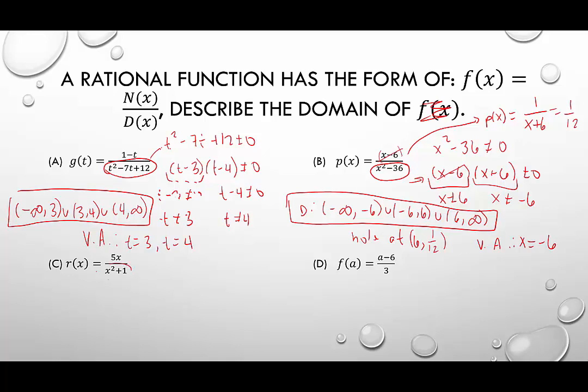In letter c, we set x squared plus 1 equal to zero and ask if that's possible. It's impossible for x squared plus 1 to equal zero because the minimum value x squared can be is 0, making x squared plus 1 at least 1. So there are no restrictions on the domain.